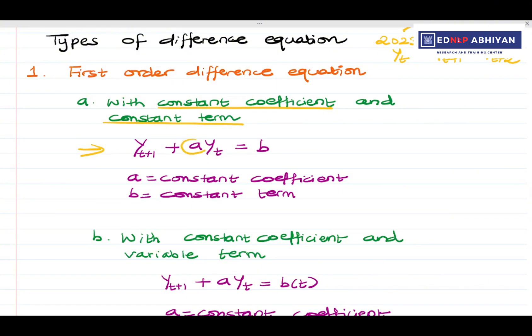We also consider the case where the equation has a constant coefficient but a variable term — meaning the term is a function of t.